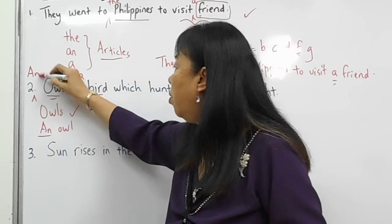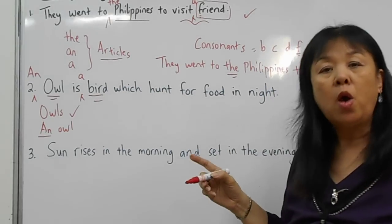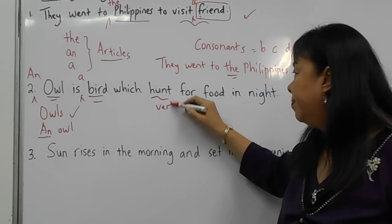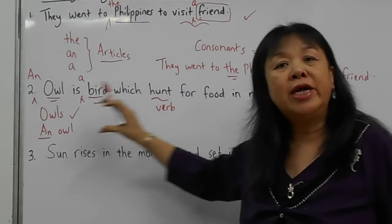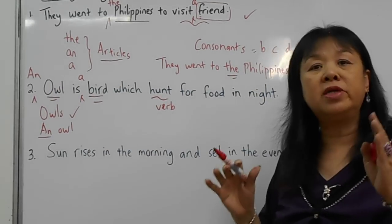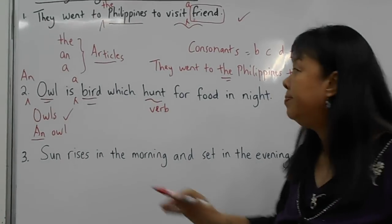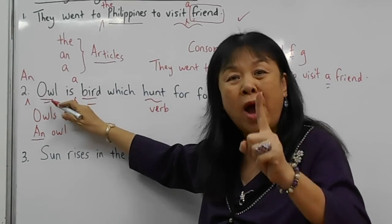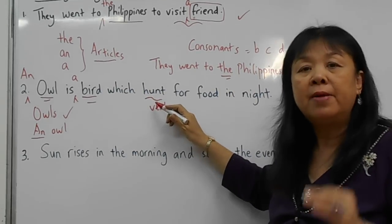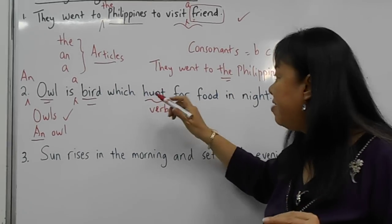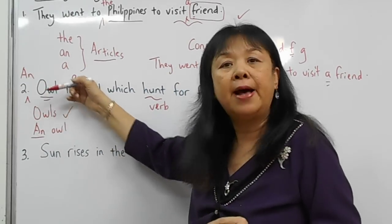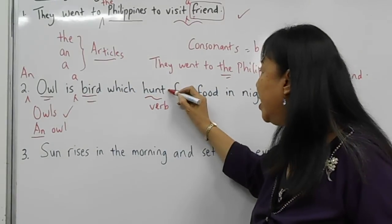An owl is a bird. 'Which' introduces a relative clause here. This is a general statement — it is a truth. When we talk about a general truth involving one owl or one person, the verb that follows must have an 's.' Therefore the correct form is 'an owl is a bird which hunts for food.'